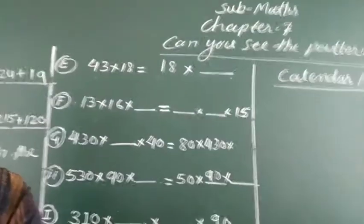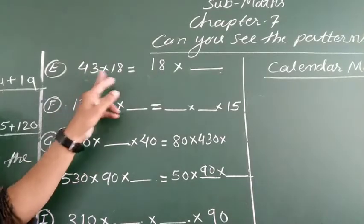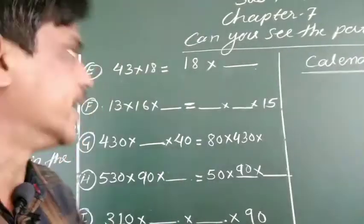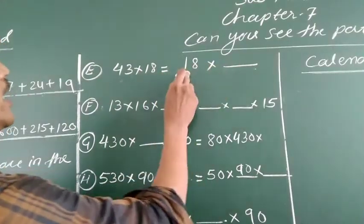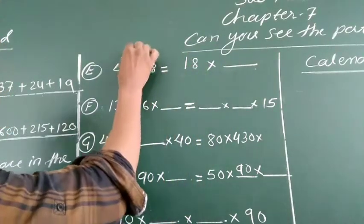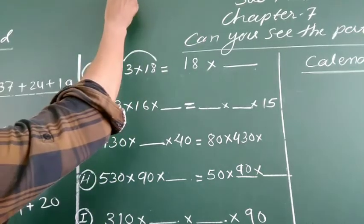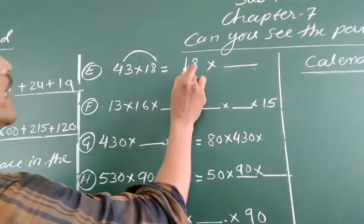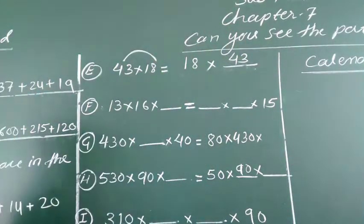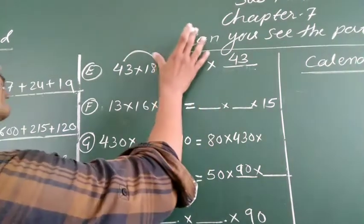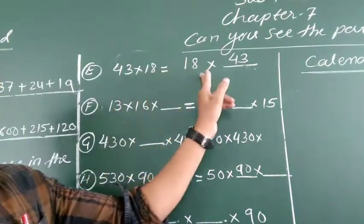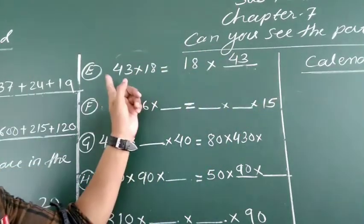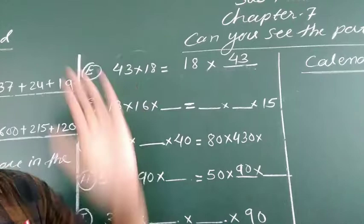Now we can see the same patterns in multiplication. Here it is: 43 into 18 equals 18 into 43. The product of these two numbers equals the product of these two numbers. What is the difference? Only the order of the numbers is changed.